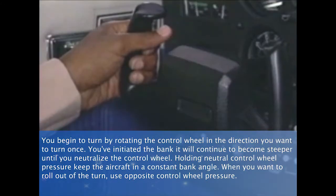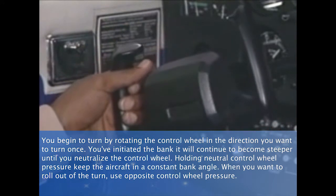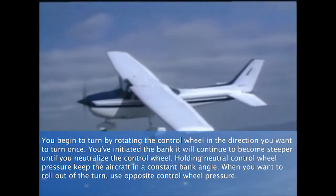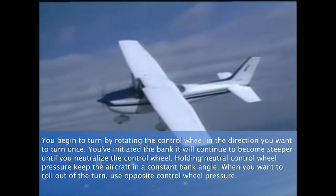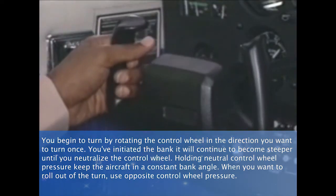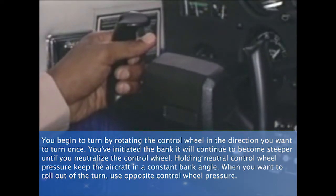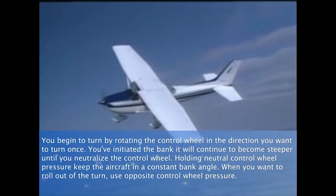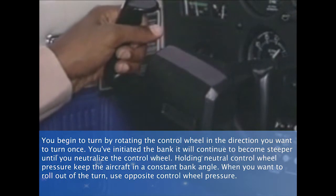You begin a turn by rotating the control wheel in the direction you want to turn. Once you have initiated the bank, it will continue to become steeper until you neutralize the control wheel. Holding neutral control wheel pressure keeps the aircraft in a constant bank angle.